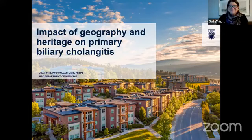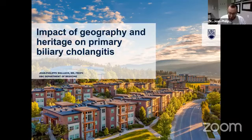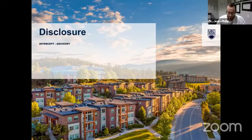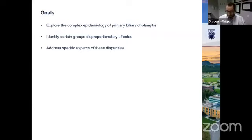Thank you to Gail and the organizers for having me participate, and thank you to everybody out there for taking your time to be with us today. I'm going to talk about the impact of geography on PBC, but I can't help but also mention heritage as well, because the two are inextricably linked, at least in our current understanding of the disease. I have no disclosures. Over the next 20 minutes, we'll explore the complex epidemiology of PBC, both macro and micro, try to isolate groups that might be disproportionately affected, and try to explain some of these disparities — and I say explain and not answer because, spoiler alert, we don't have the answers yet.